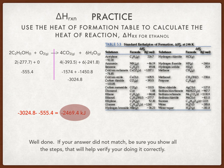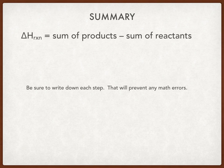We'll get some additional practice with this. In summary, the heat of reaction — or delta H reaction — is the sum of the products minus the sum of the reactants. Be sure to write down each step; that will prevent errors, and if you do make an error you'll be able to go back and figure out where it occurred. Thank you.